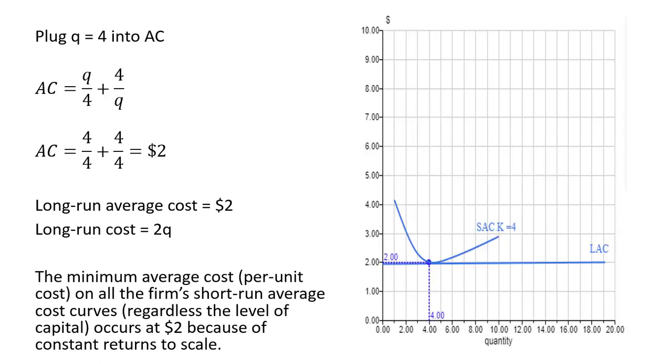We can look at this graphically. So the long-run average cost is constant at $2. And we found our short-run average cost curve. This right up here, the Q divided by 4 plus 4 divided by Q. That's a little graph of that short-run average cost curve. And it bottoms out here at 4 units of output, where per unit costs are $2.